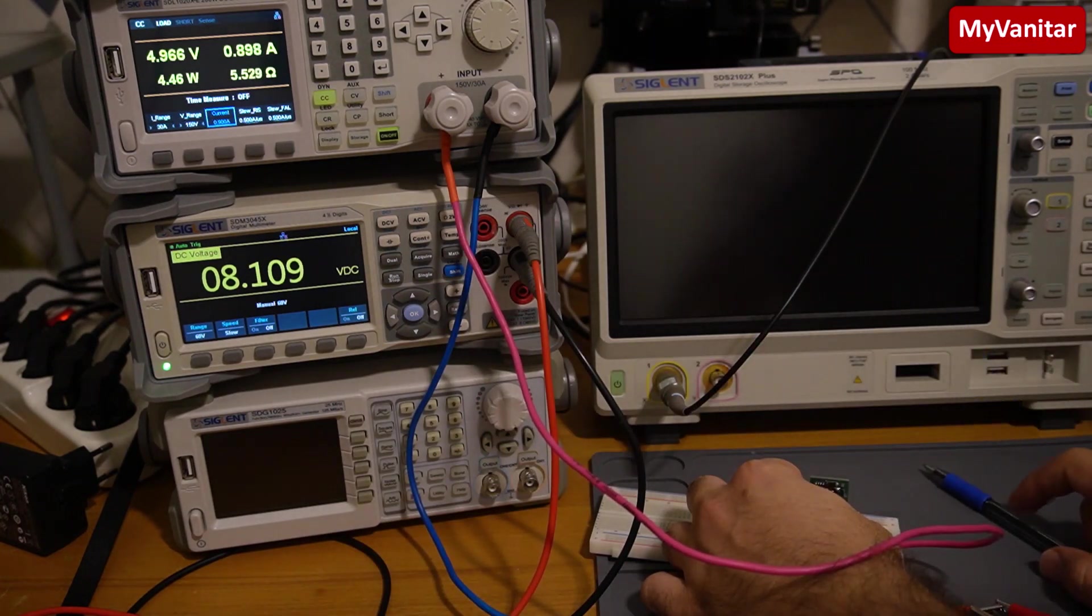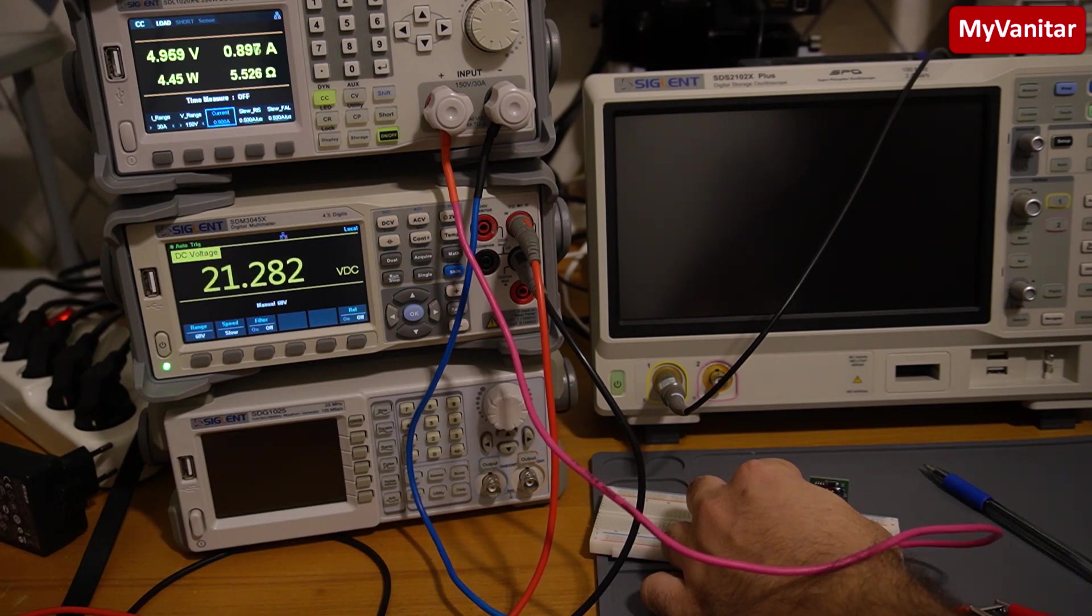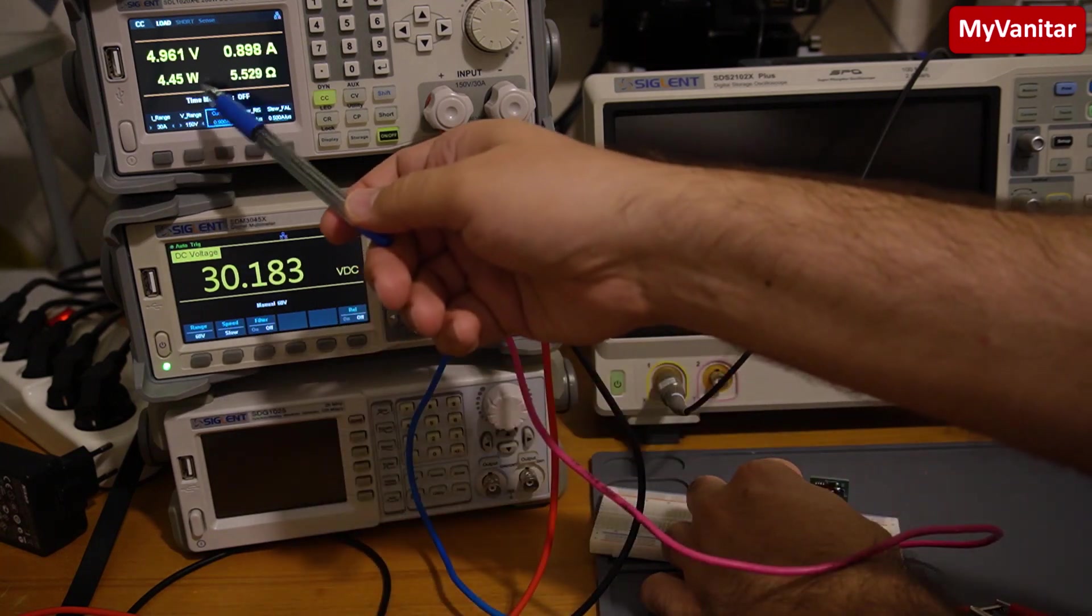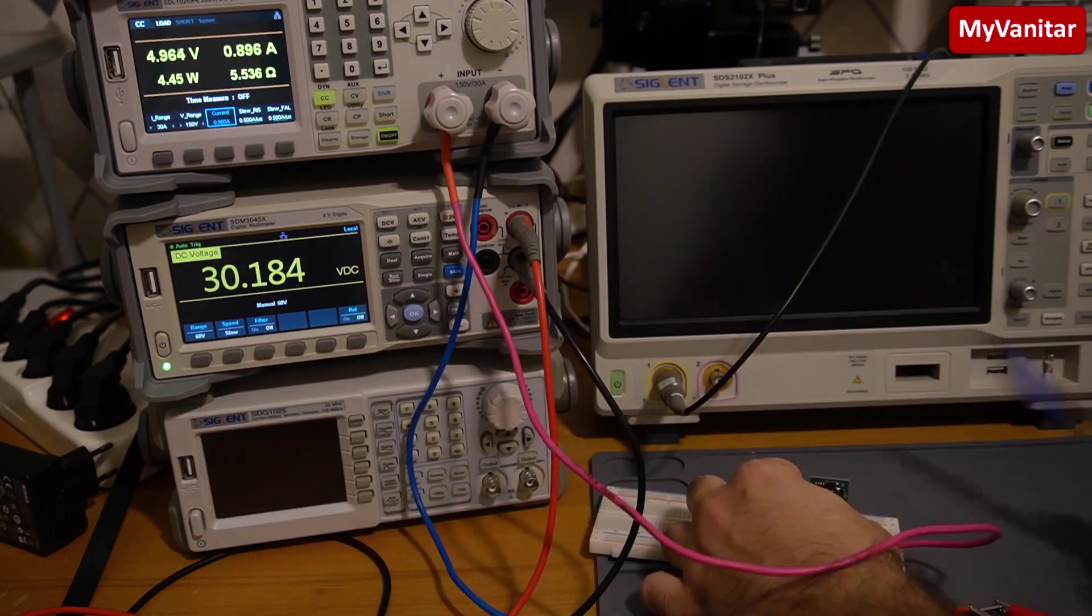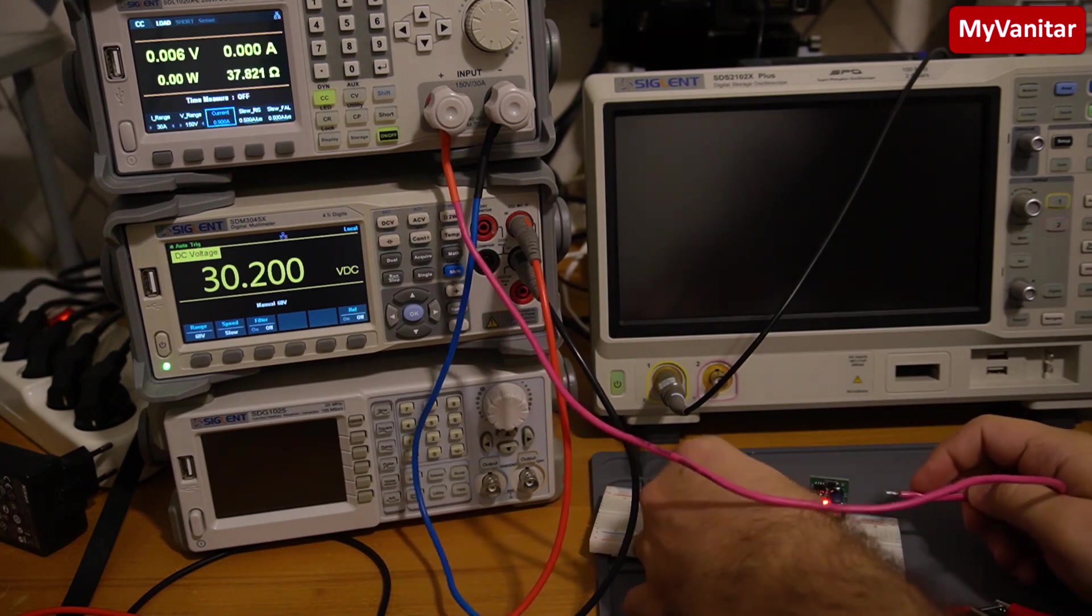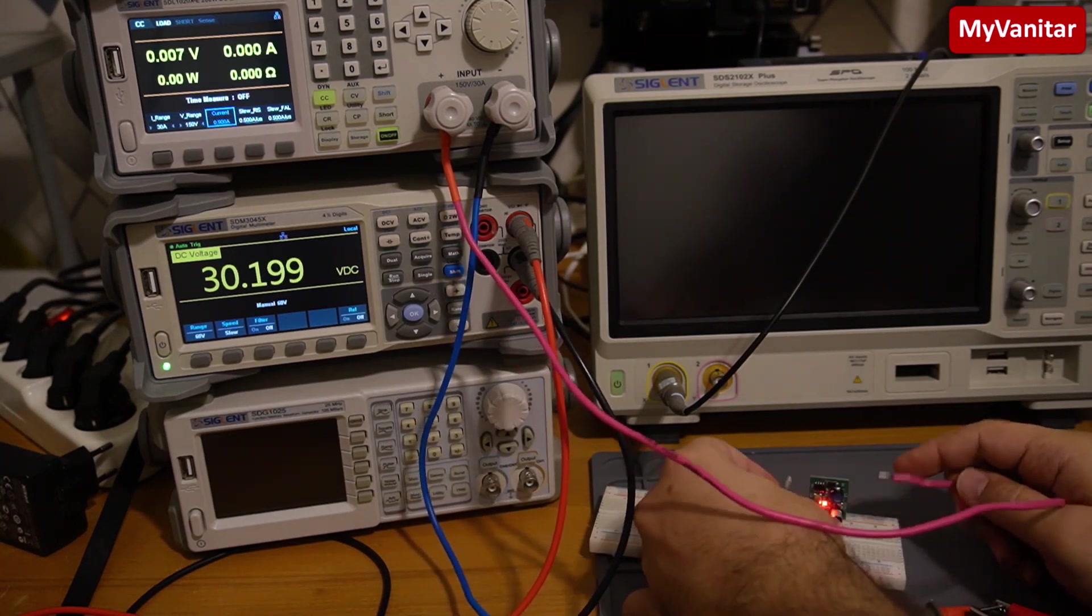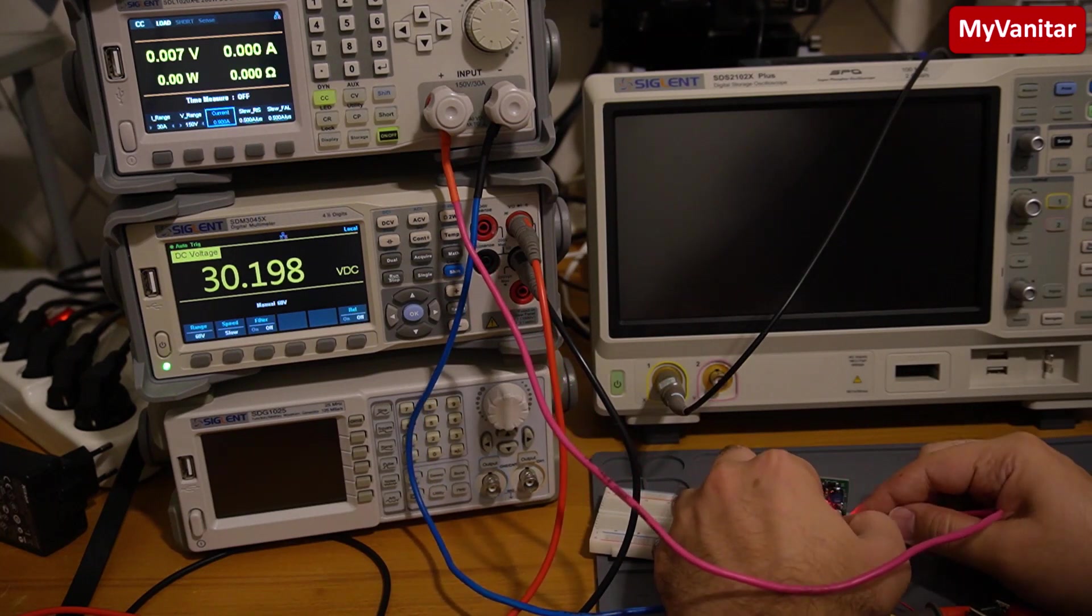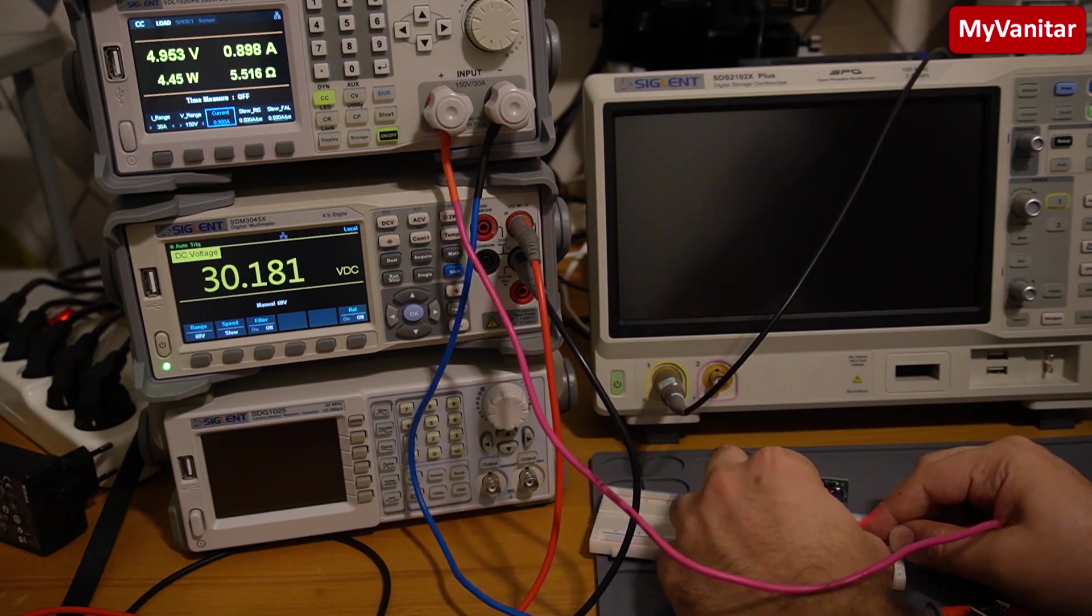Very nice. Now, let me increase the input voltage to 30. So this is the 30 volts at the input. And again, no problem at the output. Let's make the same test. So the load is on. Now I apply the load to the output.